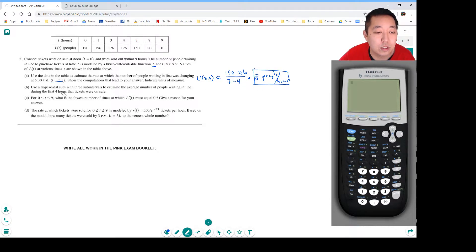Part B: Use the trapezoidal sum with three sub-intervals to estimate the average number of people waiting in line during the first four hours the tickets were on sale.